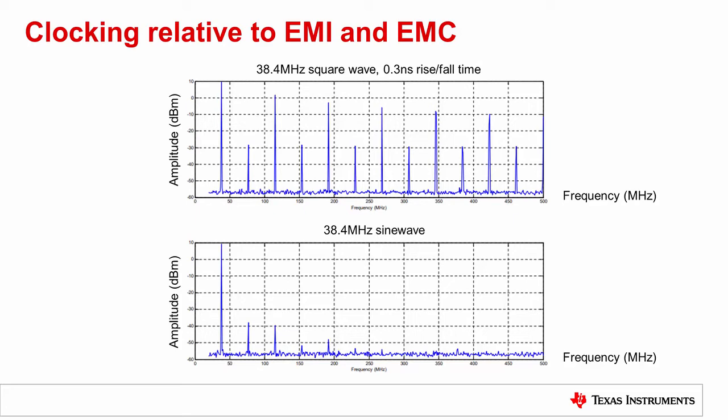The faster edge rates may create EMC problems, however. This figure is a spectrum measurement of a 38.4 MHz square wave with very fast 300 picosecond edges, compared to a measurement of a 38.4 MHz sine wave. As you can see, the amplitude of the harmonics shown are significant compared to the carrier frequency. Additionally, the presence of even harmonics on a square wave indicates a duty cycle that deviates from 50%.